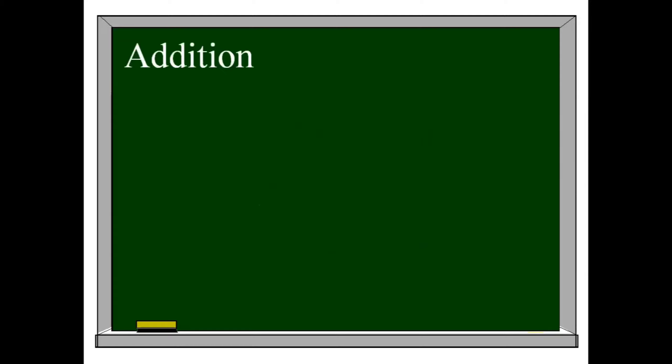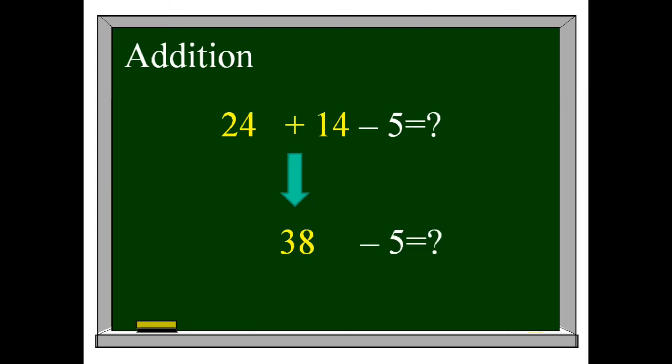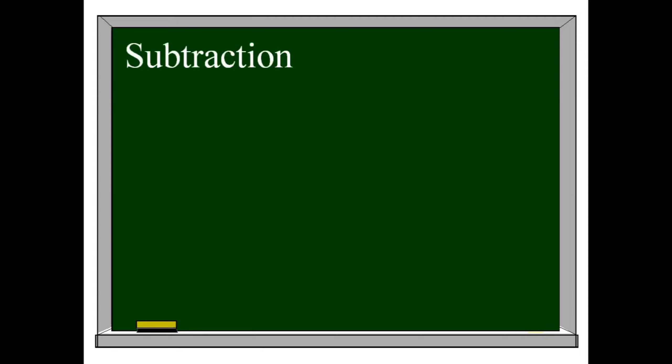The fifth step is Addition. In our expression we have 24 plus 14. 24 plus 14 is 38. Don't forget to write the remaining component of your expression. And lastly, the last step is Subtraction. We have 38 minus 5, which is equal to 33.